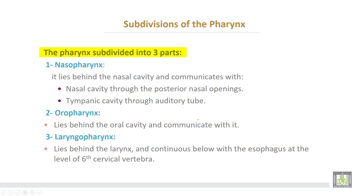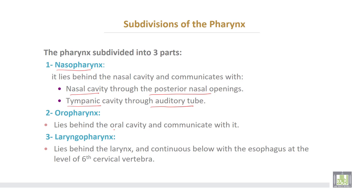The pharynx is subdivided into nasopharynx, which lies behind the nasal cavity and communicates with the nasal cavity through the posterior nasal openings, and also communicates with the tympanic cavity through the auditory tube or Eustachian tube. Oropharynx lies behind the oral cavity and communicates with it.